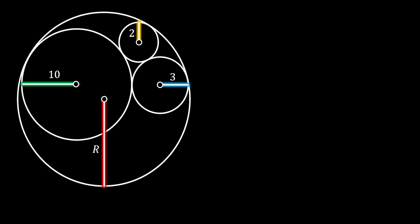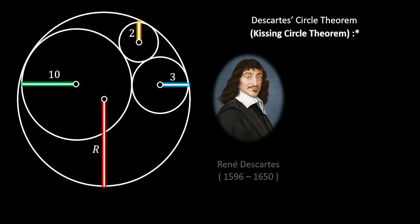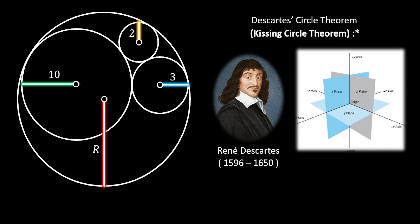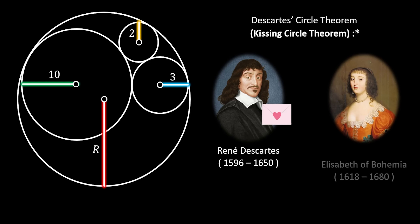Now let's get to our beautiful theorem. This theorem is actually called Descartes' Circle Theorem, but it has another name: the Kissing Circle Theorem. And if you think that's romantic, wait until you hear how this theorem came to life. The father of this theorem, as the name states, is the famous mathematician René Descartes — just the guy who invented the most used coordinate system in mathematics. The legend says that Descartes wrote this theorem in a love letter which he sent to Princess Elizabeth of Bohemia, allegedly to impress her.